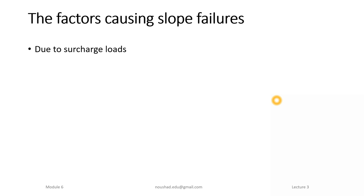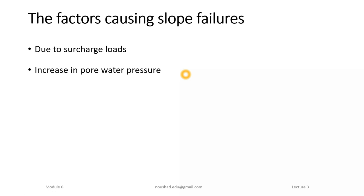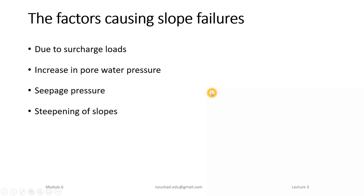When the soil is already in stress and additional external stress forms that exceeds the strength, the slope will fail. Loss of pressure will also lead to failure of the slope. Another factor is seepage pressure.